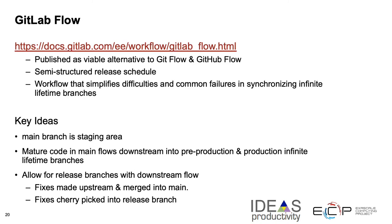Another alternative is GitLab Flow, useful for projects with a semi-structured release schedule. In this model, there are pre-production and production lifetime branches. Pre-production branches serve as a way for early adopters to try code and possibly find issues before production. Main is a staging area, and as code matures in main, it flows downstream into pre-production and production. Fixes are made in the main branch and will be cherry-picked for inclusion in release branches.